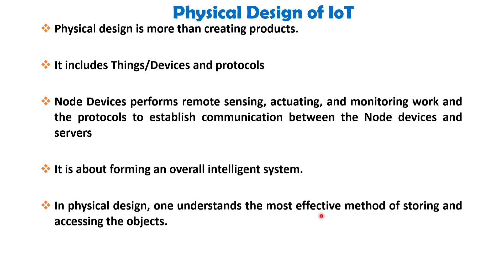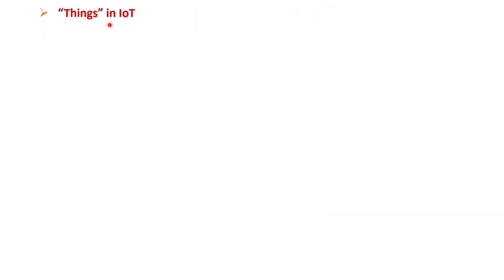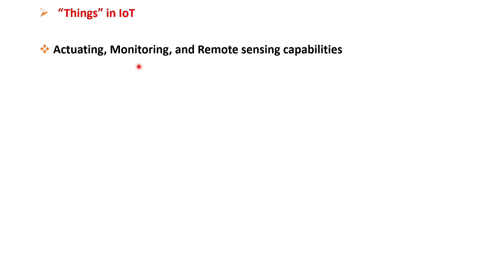Now let us delve into the things aspect in the context of IoT. Things pertain to IoT devices that possess distinct identities and are equipped with capabilities for actuation, monitoring and remote sensing. These functions collectively generate data that can be analyzed by an analytical system and programmed to perform various operations, thereby enhancing the overall system.